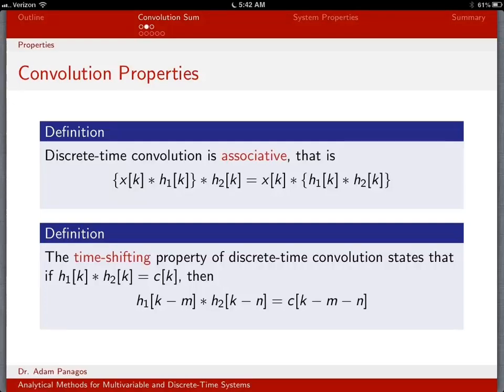The next two discrete time convolution properties we want to look at are the associative and time-shifting properties. The associative property says that the quantity x convolved with h1, convolved with h2, is equivalent to x convolved with the quantity h1 convolved with h2. We can group discrete time convolution however we like — associating these pairs either way is equivalent.